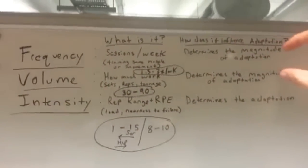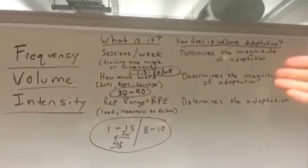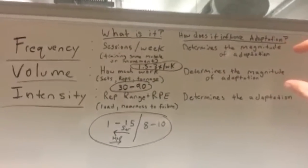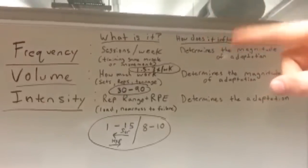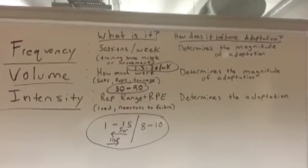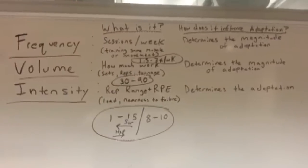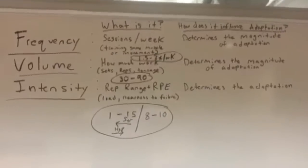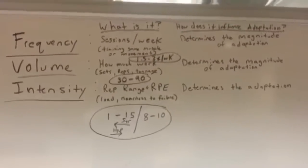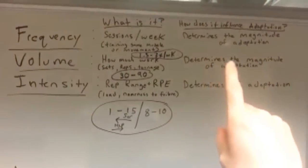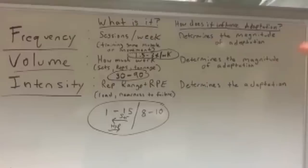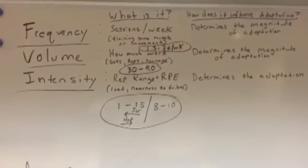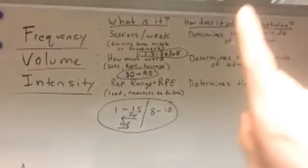Frequency and volume are both really just ways of getting more volume — it's how much work you do and how frequently you do it, so how much work in a given period of time. Volume determines the magnitude of the adaptation. This is why we have so many volume junkies — if a little bit is good, more is better, and as much as you can possibly do is optimal. But the most volume you can recover from is going to be optimal for how quickly you can adapt. Most people aren't recovering optimally — they're doing non-functional overreaching many times.